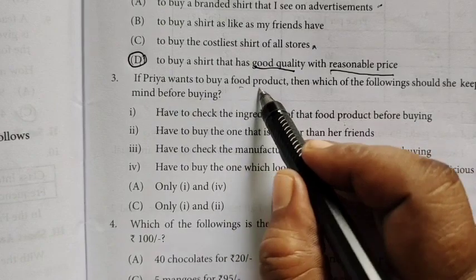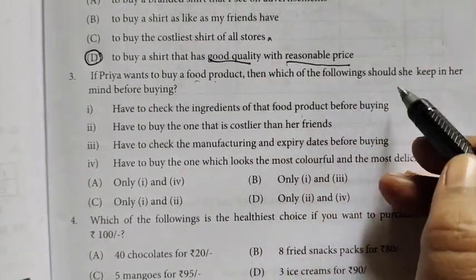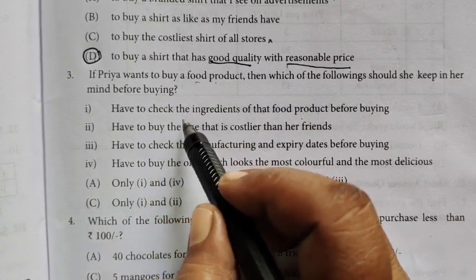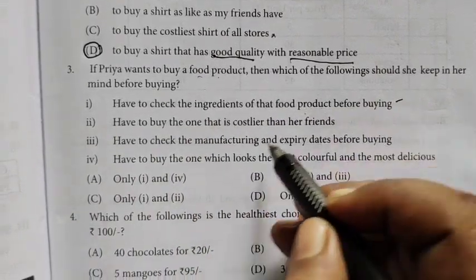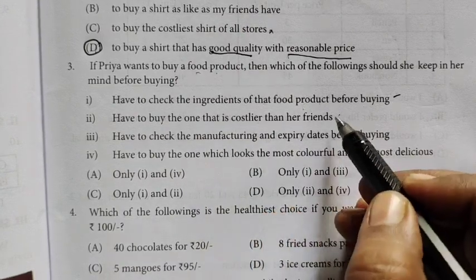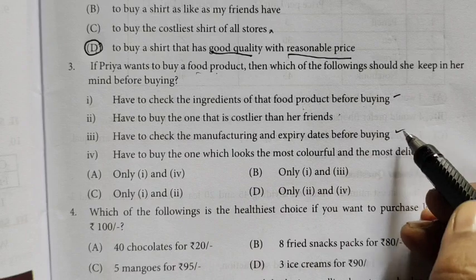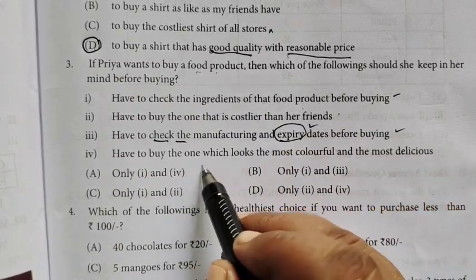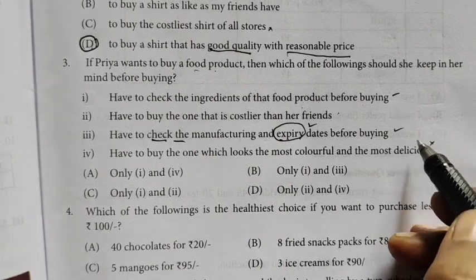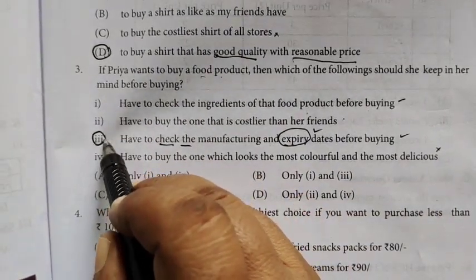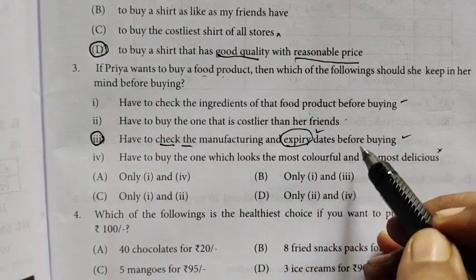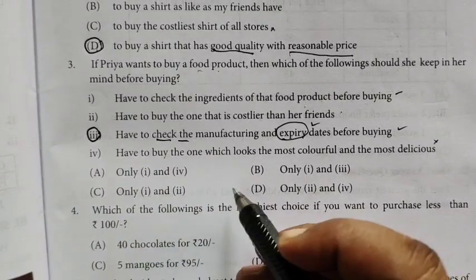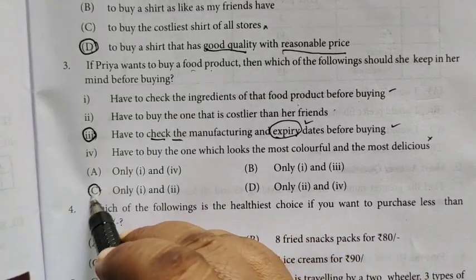If Priya wants to buy a food product, then which of the following should be kept in mind before buying? Have to check the ingredients of the food product, have to buy the one that is costlier, have to check the manufacturing date and expiry date, have to buy one which looks the most colorful. Which one is the third option? Have to check the manufacturing and expiry date. One and three, this is the answer, option C.